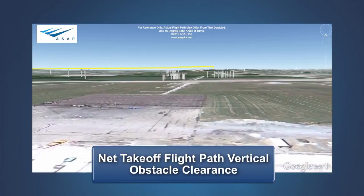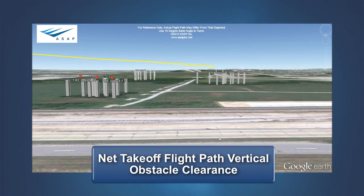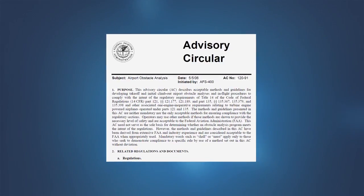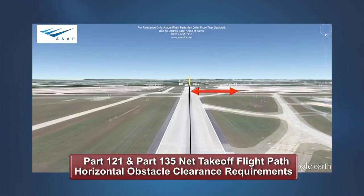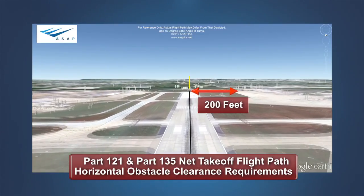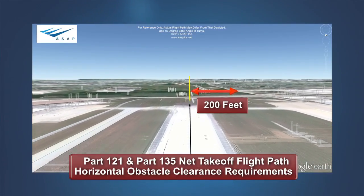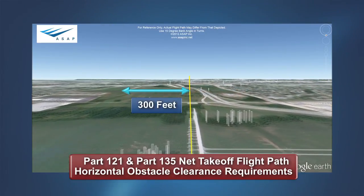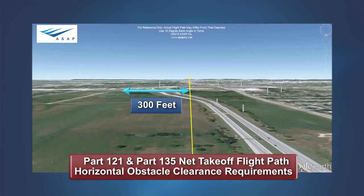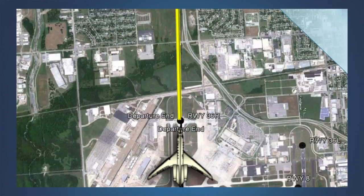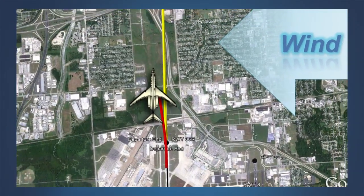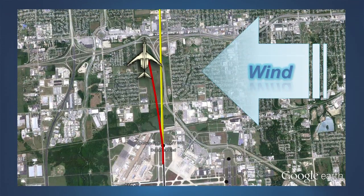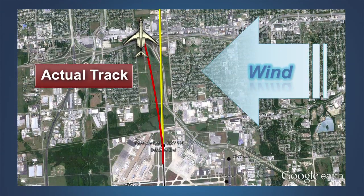Our discussion thus far has focused on how the net takeoff flight path clears obstacles by the required height, but we haven't discussed which obstacles must be cleared. To help answer this question, FAA released Advisory Circular AC 120-91, Airport Obstacle Analysis. According to the operating rules in Part 121 and Part 135, any obstacles located 200 feet on either side of the flight path within the airport boundary, or 300 feet on either side after passing the airport boundary, must be cleared vertically by the net takeoff flight path. This Advisory Circular, released in 2006, provides guidance on developing obstacle analysis that meets the intent of this requirement by accounting for factors that may cause a difference between the intended track and the actual track following an engine failure.